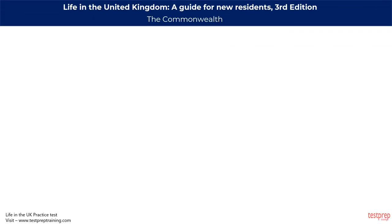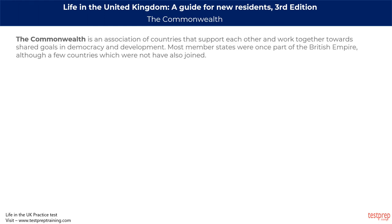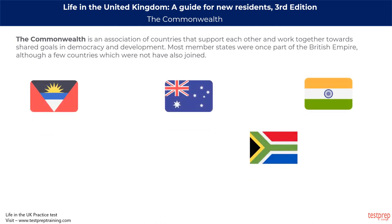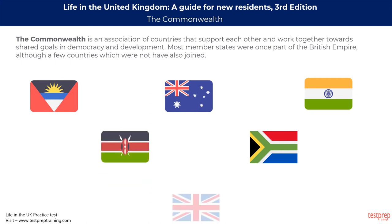The Commonwealth is an association of countries that support each other and work together towards shared goals in democracy and development. Most member states were once part of the British Empire, although a few that were not have also joined. The Commonwealth is based on the core values of democracy, good government, and the rule of law. It comprises 54 countries across all continents. Some Commonwealth members include Antigua and Barbuda, Australia, India, South Africa, Kenya, and the United Kingdom.